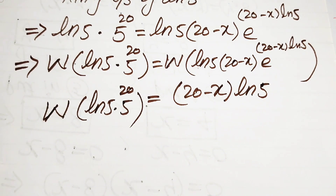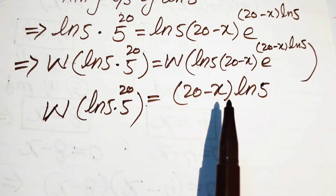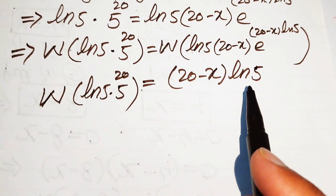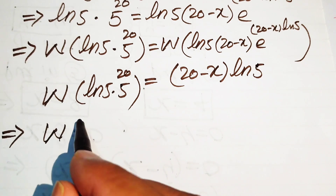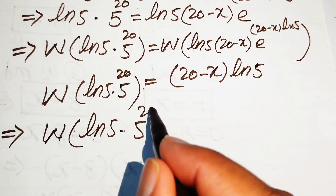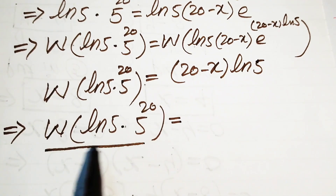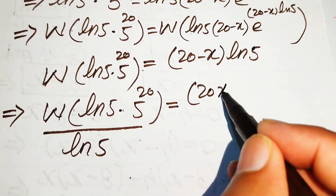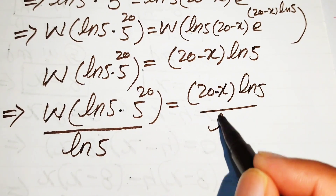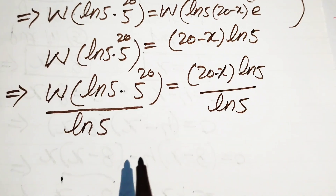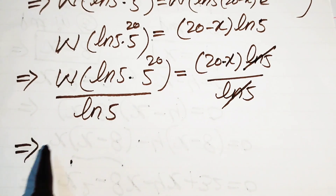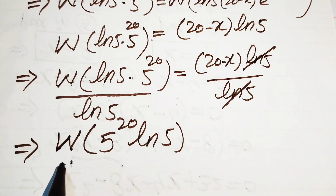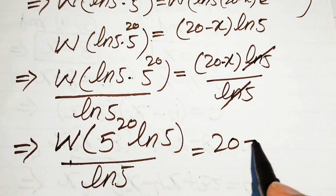The target is to find the value of x, so we separate x from all other values. We divide both sides by log 5 — since log 5 is multiplied on the right — so log 5 cancels out. We obtain: W of 5 to the power of 20 times log 5 divided by log 5 equals 20 minus x.